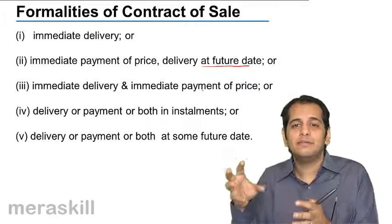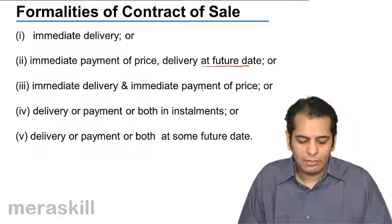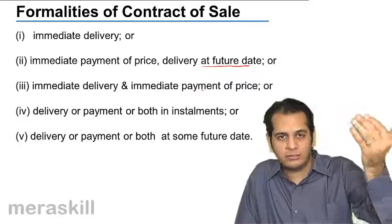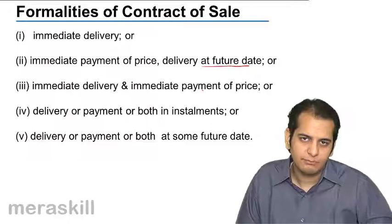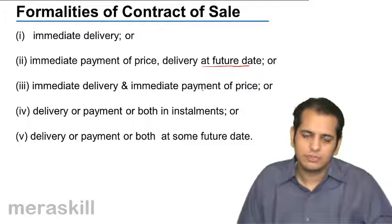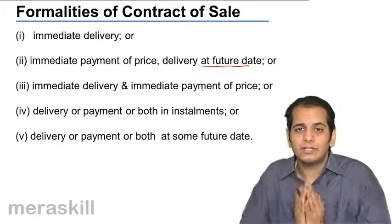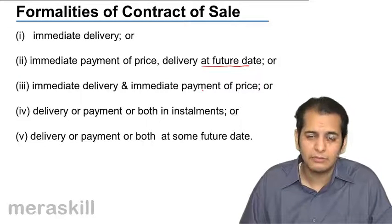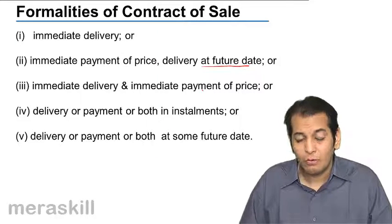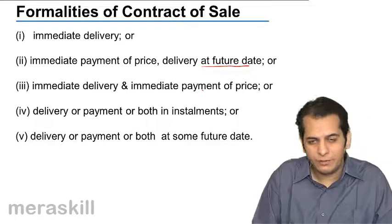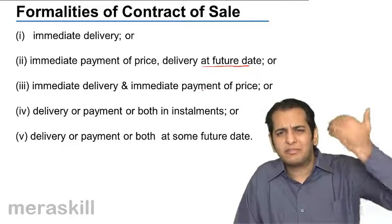So either both delivery and price payment can be immediate, or both can be in installments. The final formality is that either the delivery is on a future date and the payment of price is immediate, or the payment of price is on a future date and the delivery is immediate. When you purchase electronics, you pay the price and take the delivery on a future date — that is an advanced payment. Or many times you get the delivery first and pay the price on a future date, which happens in credit purchases.